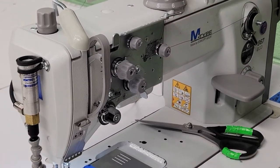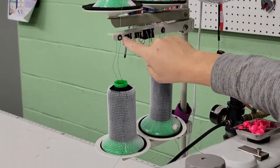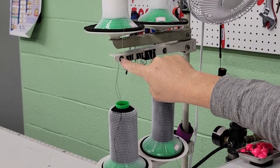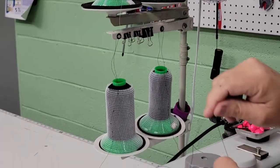All right, this is how you thread the top part of the Adler 867. Make sure that your guide is directly above your spool of thread.